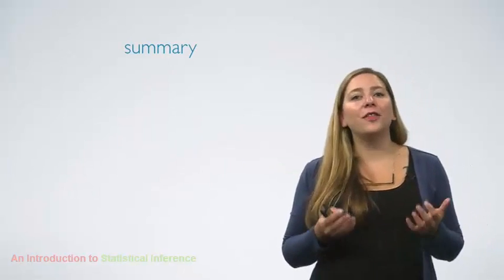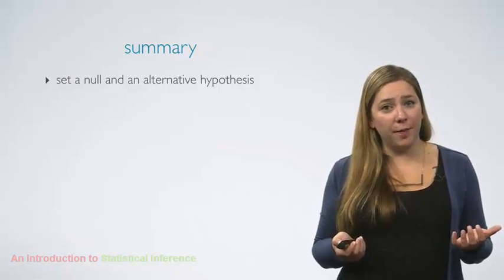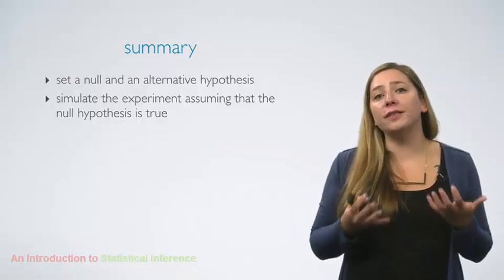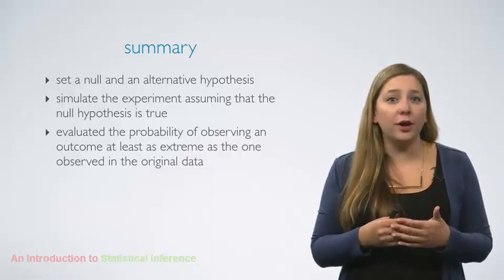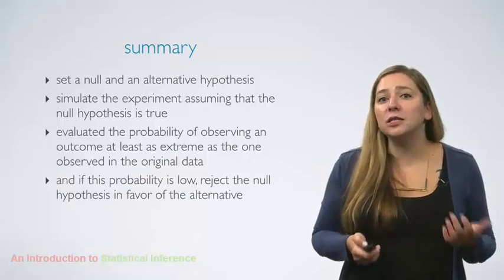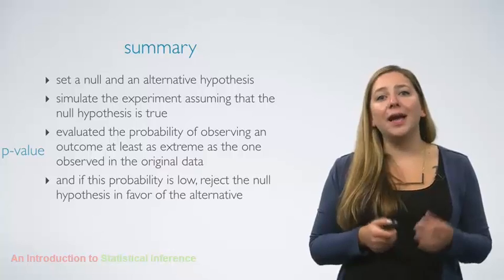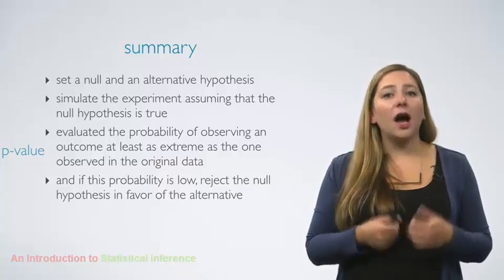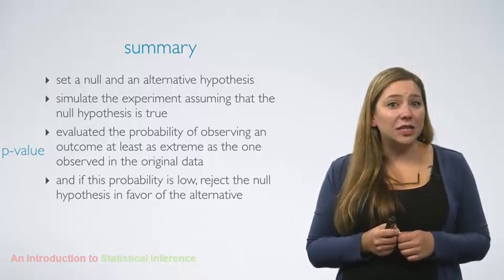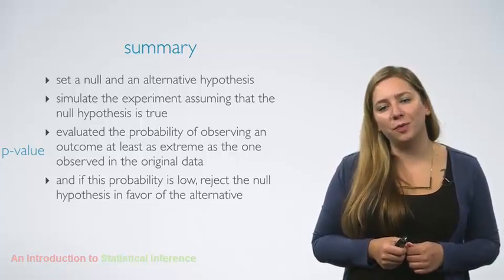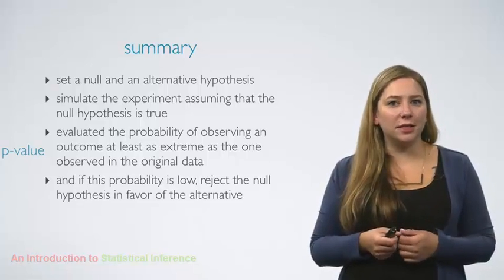We just walked through a brief example that introduces statistical inference, and more specifically, hypothesis tests. We started by setting a null and an alternative hypothesis, then we simulated the experiment assuming that the null hypothesis were true, and we evaluated the probability of observing an outcome at least as extreme as the one observed in the original data. Since this probability was low, we decided to reject the null hypothesis in favor of the alternative. The probability of observing data at least as extreme as the one observed in the original study, under the assumption that the null hypothesis is true, is called the p-value — one of the commonly used criteria for making decisions between competing hypotheses. We will continue our discussion on p-values and hypothesis tests in future units.